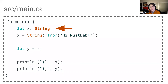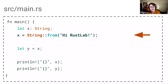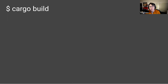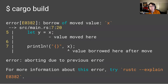Then we set the value of x to the string 'hi RustLab' — RustLab was a conference that I gave this talk at as well. Then we say that the variable y's value is equal to the value of the x variable. And then we attempt to print both variables out on the console. When we try to build this piece of code with cargo build and try to compile it, we get an error. And this error is a result of the borrow checker.